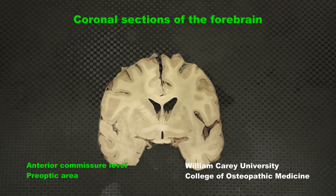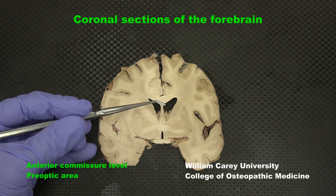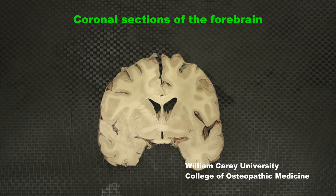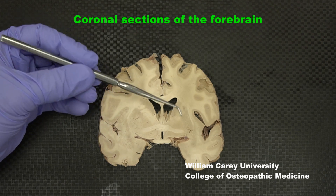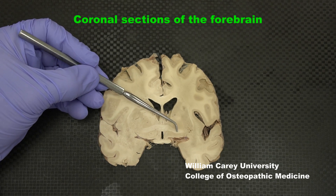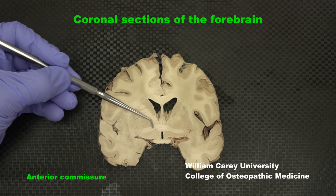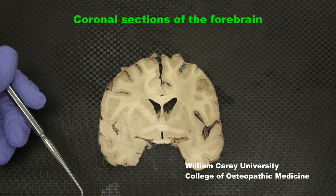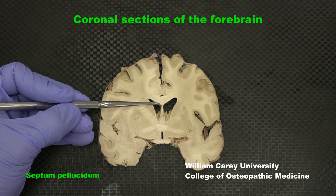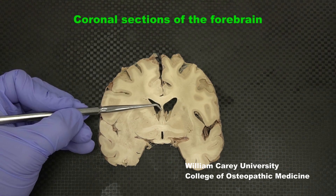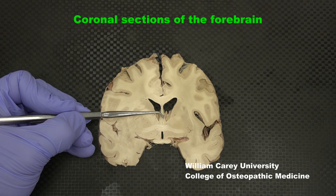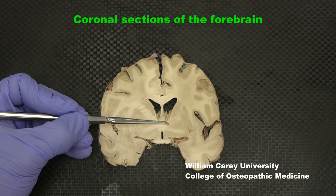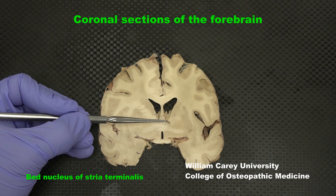The next rostral-caudal level coincides with the preoptic hypothalamus adjacent to the third ventricle, which is clearly visible at this level. An important landmark here is the anterior commissure, a fairly large white matter band connecting the two sides. Here is the septum pellucidum, sweeping down ventrally into the septal nuclei. In this corner is the bed nucleus of the stria terminalis.